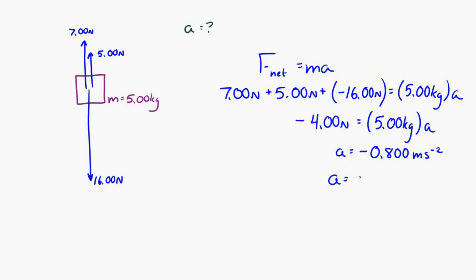Using that a Newton per kilogram equals a meter per second squared, the units come out correctly, so the acceleration is 0.800 meters per second squared downward.